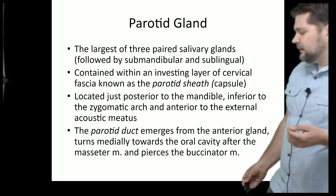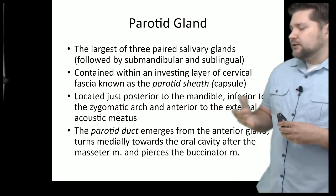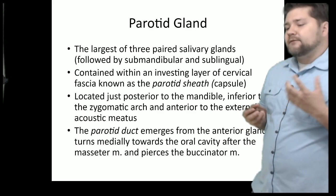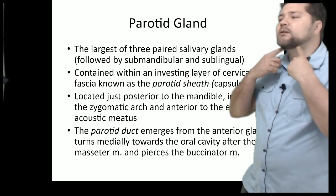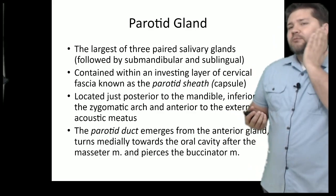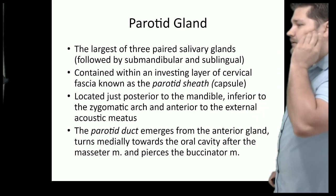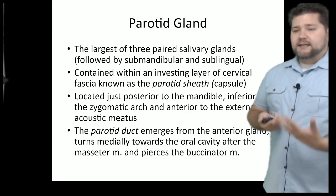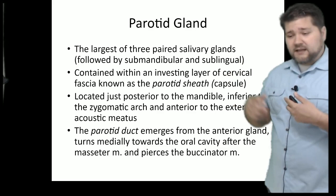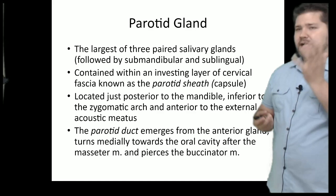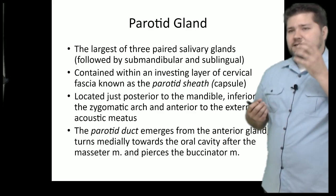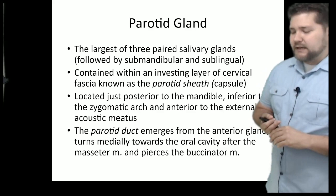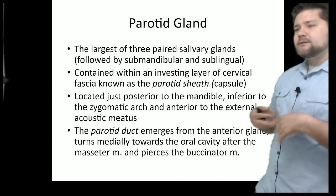The parotid gland is the largest salivary gland, located anterior to the ear on the cheek. The facial nerve branches emerge from underneath it — that's why finding the parotid first helps orient you in dissection. It's surrounded by a parotid sheath that's slightly capsulated but with indistinct borders. The parotid duct comes from its anterior aspect heading toward the oral cavity and can look like a nerve but is usually too large and floppy.